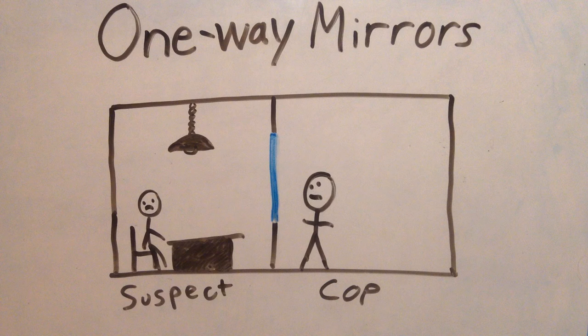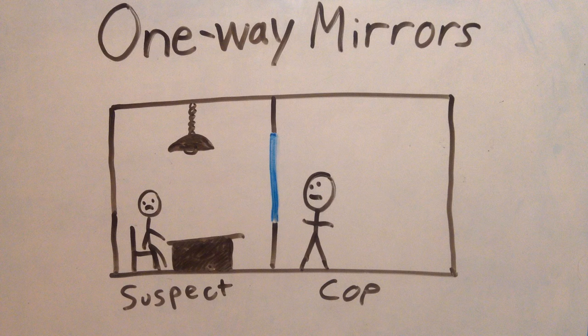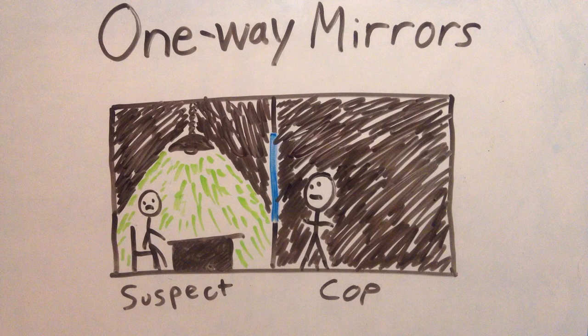One-way mirrors are not painted with a black background because the person needs to be able to see through the back of the mirror. If a one-way mirror is placed in an interrogation room, the suspect's room will be lit up and the cop's room would be dark.